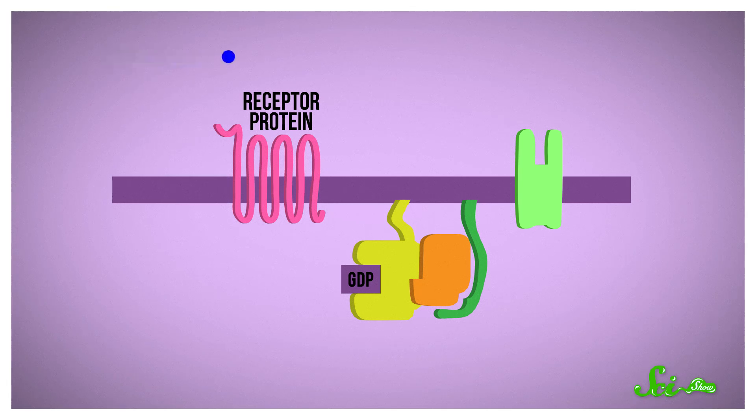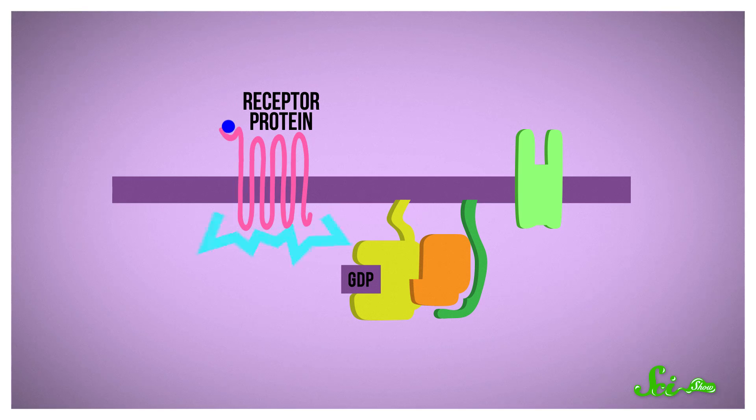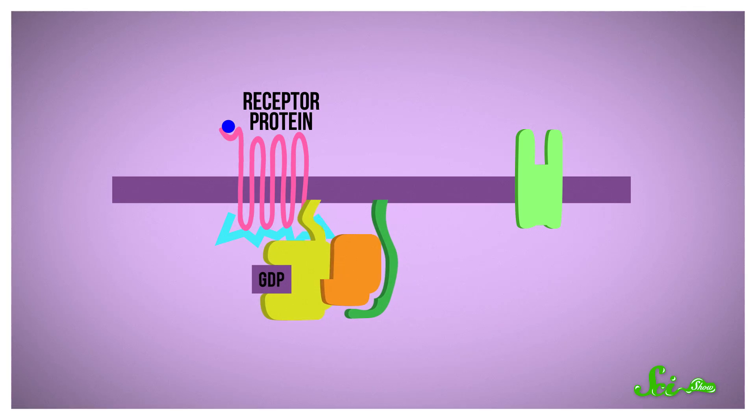like heart and skeletal muscle. The receptors' ability to change shape allows them to transmit messages from a few molecules outside the cell and cause major changes inside.